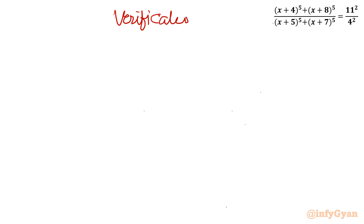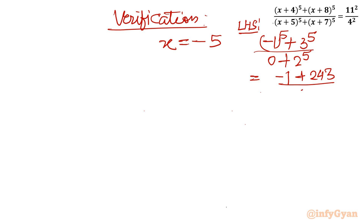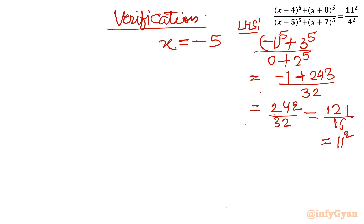Let us verify both. For x = −5: numerator is (−1)^5 + (3)^5 = −1 + 243 = 242; denominator is (0)^5 + (2)^5. Wait — x+5 = 0, so let me recalculate: numerator (−1)^5 + 3^5 = −1 + 243 = 242, denominator 2^5 = 32. So LHS = 242/32 = 121/16 = 11²/4² = RHS. Verified.